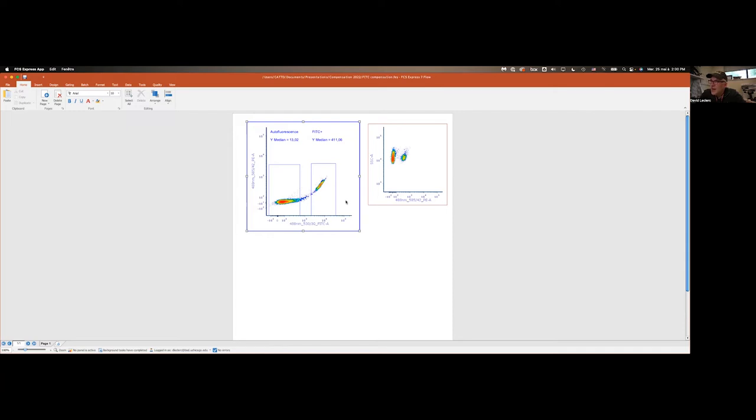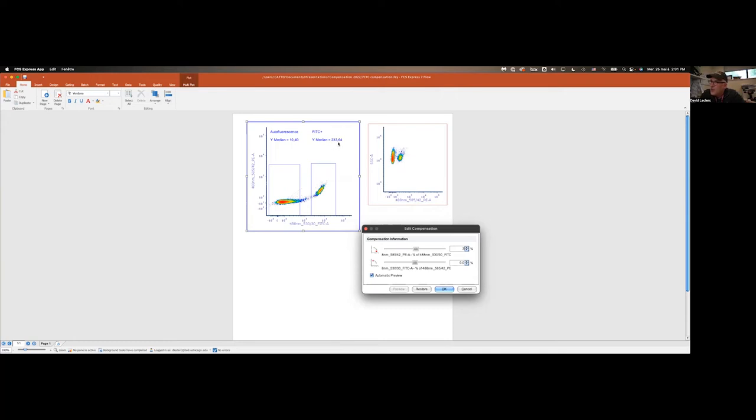In FCS Express, I have this compensation tool. I have a matrix called You Shall Not Spill that will allow me to subtract a percentage of my FITC signal bleeding in my PE channel. As I increase this value, we'll see the median value go down. If I go to 3%, I can see that the value shrank to about 233, and my artifact is slowly disappearing. If I go to 5%, still not quite there. The artifact is still present but slowly going away. My median is now at 115.